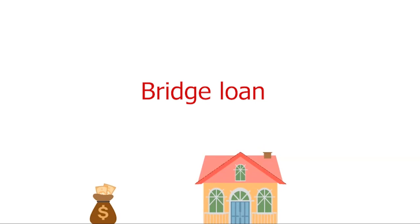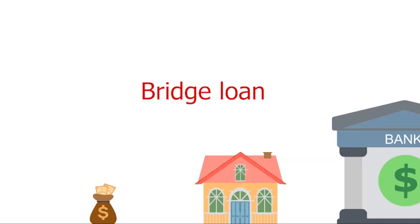Bridge Loan: in literal terms, a bridge loan is an in-between or connecting funding between the termination of one loan and the start of another. A practical example is when you are buying and selling a house at the same time. If your current home is worth $180,000 with an outstanding debt of $80,000, and the new house has a tag price of $280,000 with a 20% down payment of $56,000, you may get a bridge loan of 80% of your current home value — $144,000 — enough to pay the outstanding debt and cover the down payment plus closing costs of $12,000.